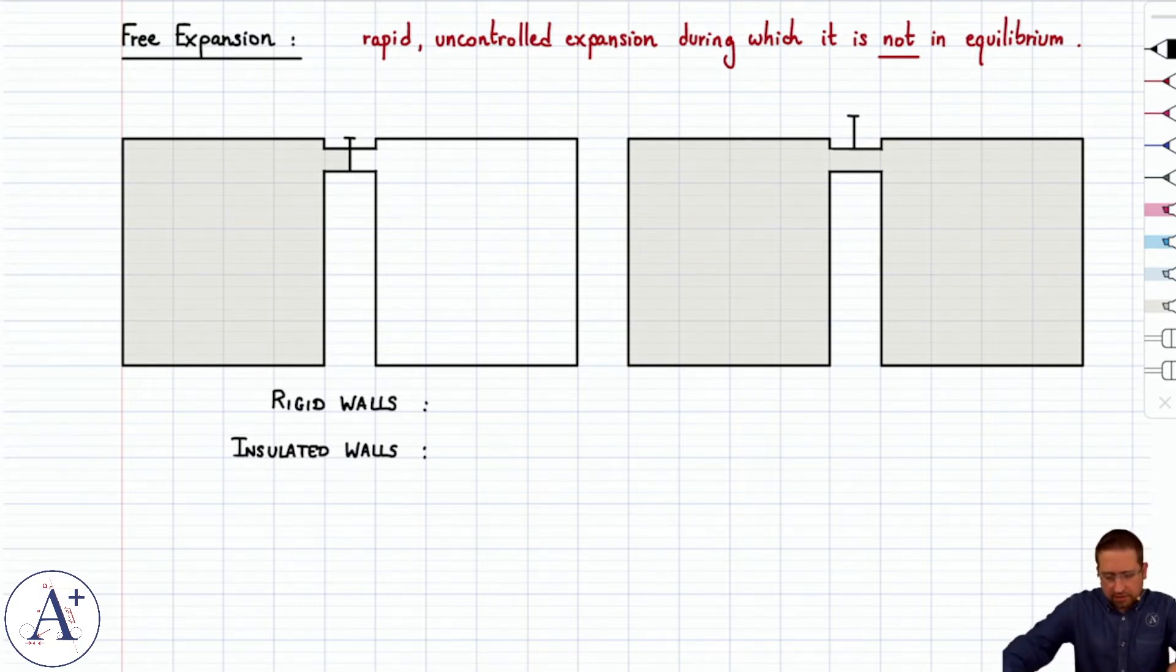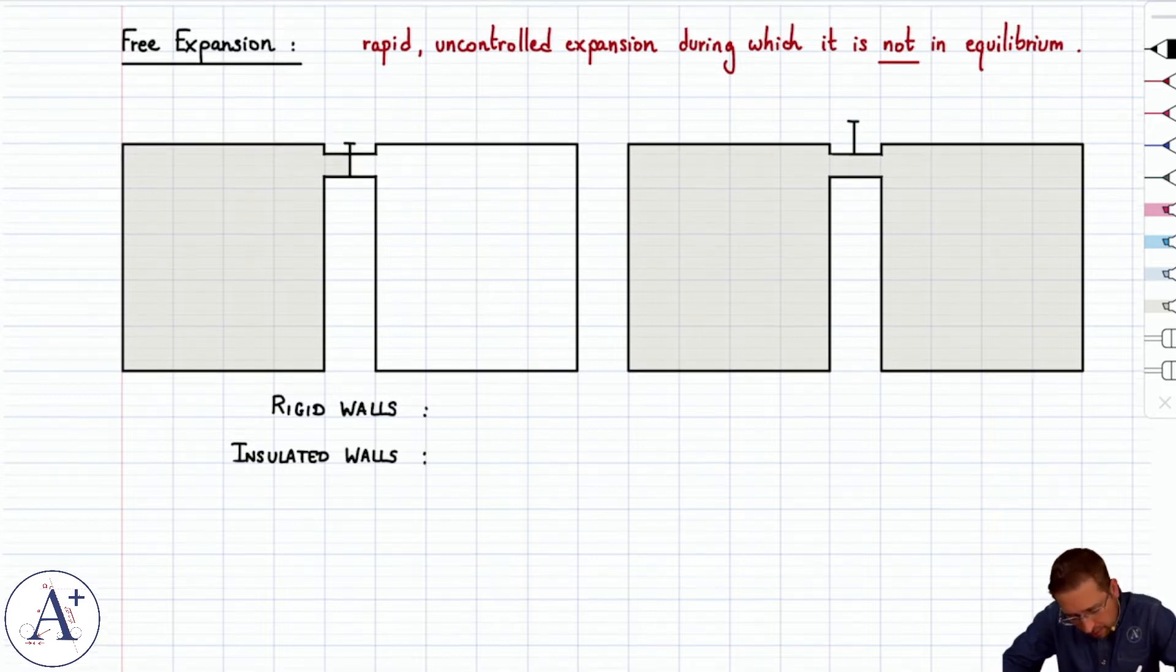So let's talk about what happens during the expansion. If we open the valve and let the gas flow into the container on the right and reach equilibrium, we have two containers here that have rigid walls and insulated walls. Now rigid walls means that the work done by the gas is zero, and insulated walls means that there's no heat transfer.